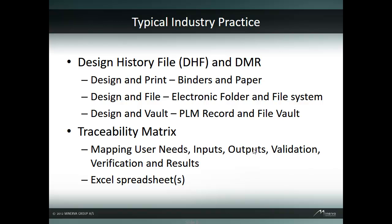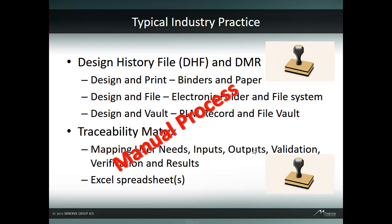Since it is a regulation to have a DHF and DMR, the typical industry practice is to design and print, meaning to do the design and then print to paper and store in a physical binder. Some design and file, meaning that they store the electronic file into a file system that is structured to look like a DHF binder. Others use PLM-created structured document records, mimicking the design history file binder and managing the files in the PLM vault. To keep track of traceability of user needs, design inputs and outputs, and their validation and verification plans along with the results, a common industry practice is to utilize Excel spreadsheets. In all cases, this is a manual process that is very labor-intensive and error-prone. Even if the product is correct, having data that is incomplete or at the wrong revision can trigger problems with an audit.